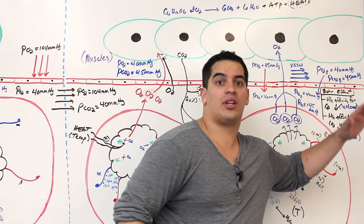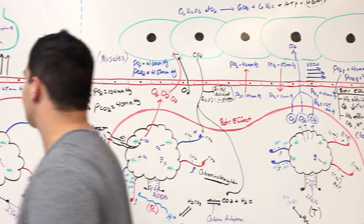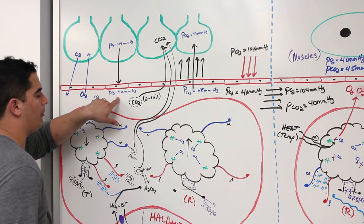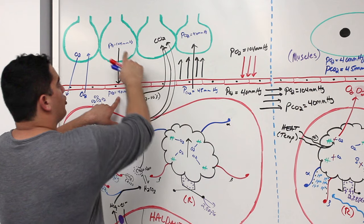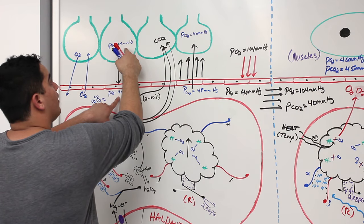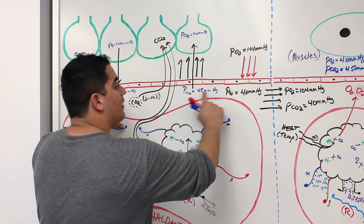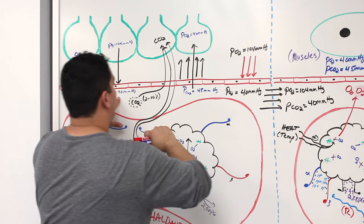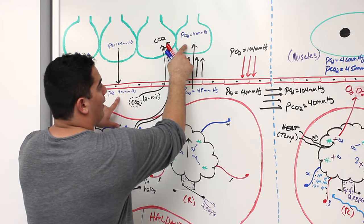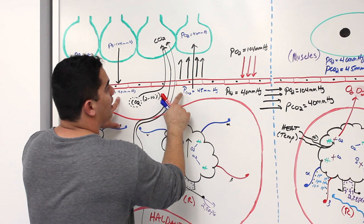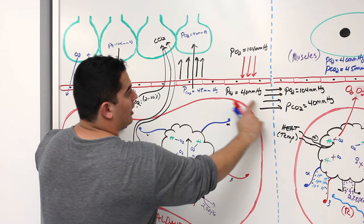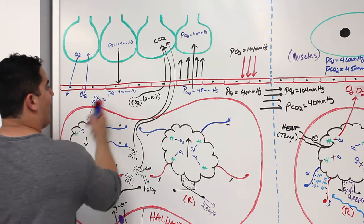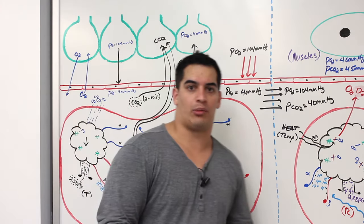This venous blood then goes to the lungs. There, oxygen moves from the alveoli (high pressure) into the blood until partial pressure of O2 equals 104 mmHg. CO2 moves from the blood into the alveoli until partial pressure of CO2 equals 40 mmHg. The blood then returns at 40 mmHg CO2 and 45 mmHg CO2 when it undergoes the internal respiration process again.